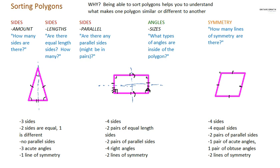Are there any parallel sides? Yep, there's two pairs again. One here. These two will never cross. And another pair. These two will never cross. So, two pairs.